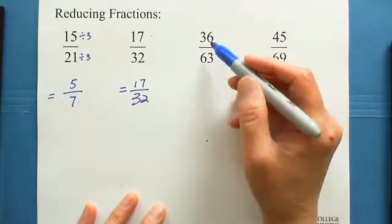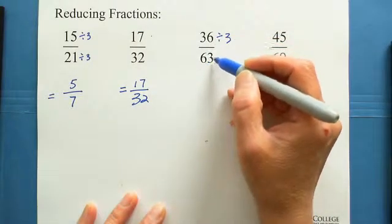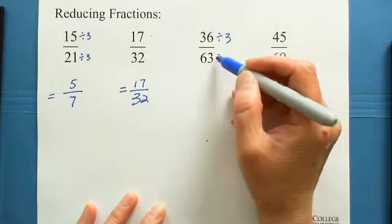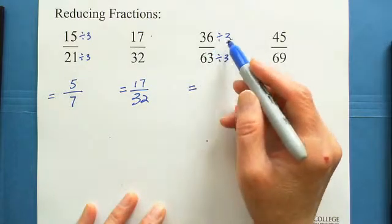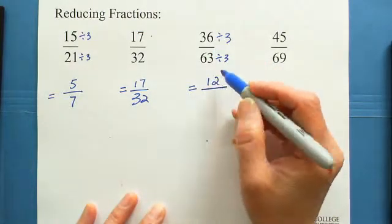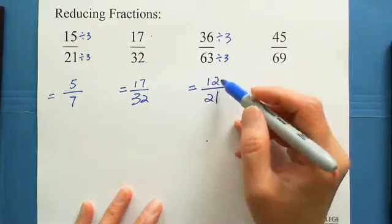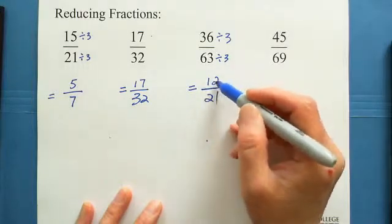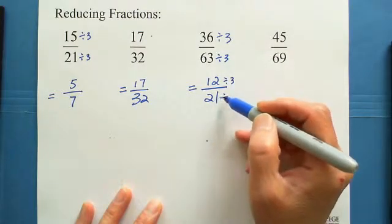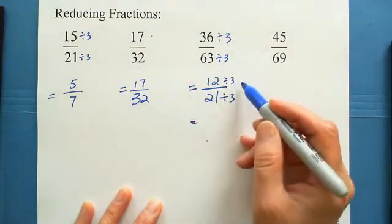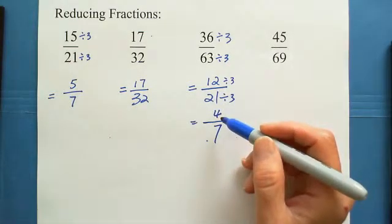For 36 over 63: 3 plus 6 is 9, which is triple of 3. 6 plus 3 is also 9, triple of 3. So both are divisible by 3. 36 divided by 3 is 12, and 63 divided by 3 is 21. After this step, it can still be reduced: 1 plus 2 equals 3 and 2 plus 1 equals 3, both divisible by 3. So 12 divided by 3 equals 4, and 21 divided by 3 equals 7. The answer is 4 over 7.